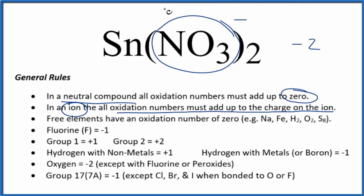In order for everything here to add up to zero, tin has to be a plus two. So the oxidation number on the tin, that's plus two. That's why we call this tin(II) nitrate.